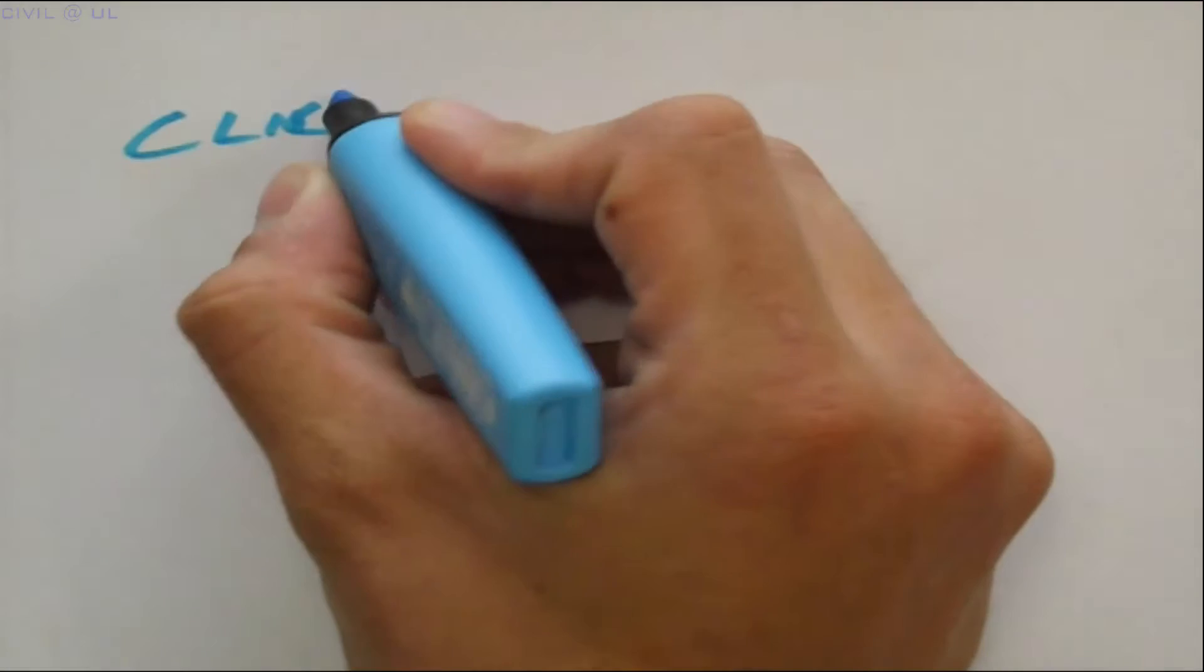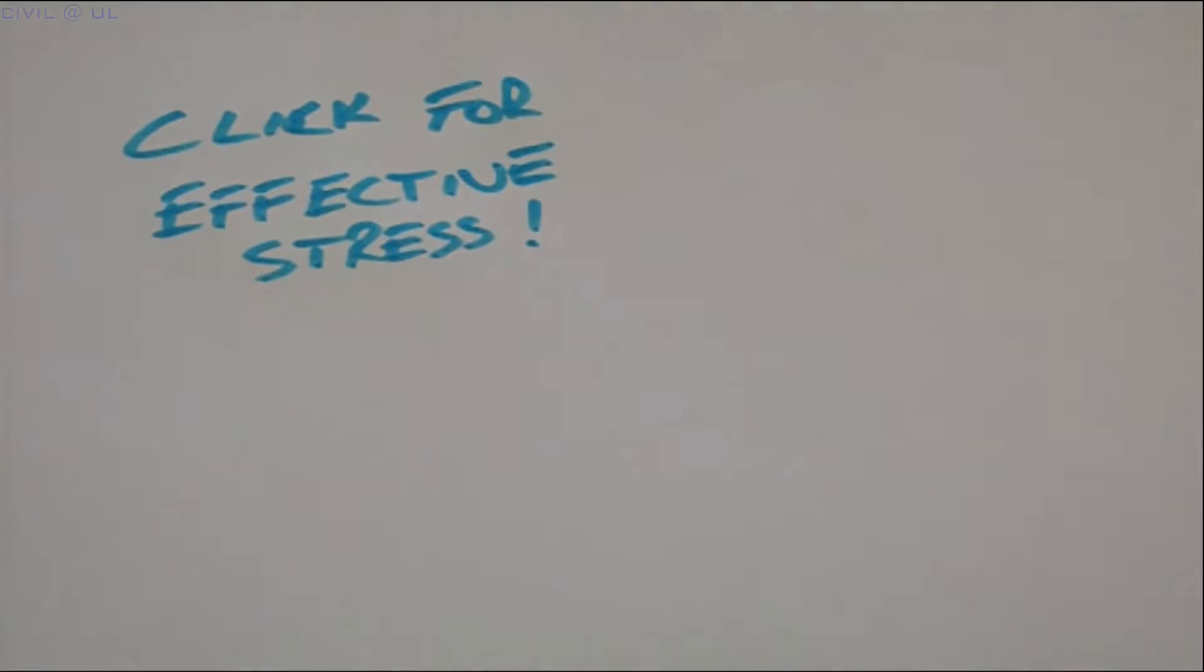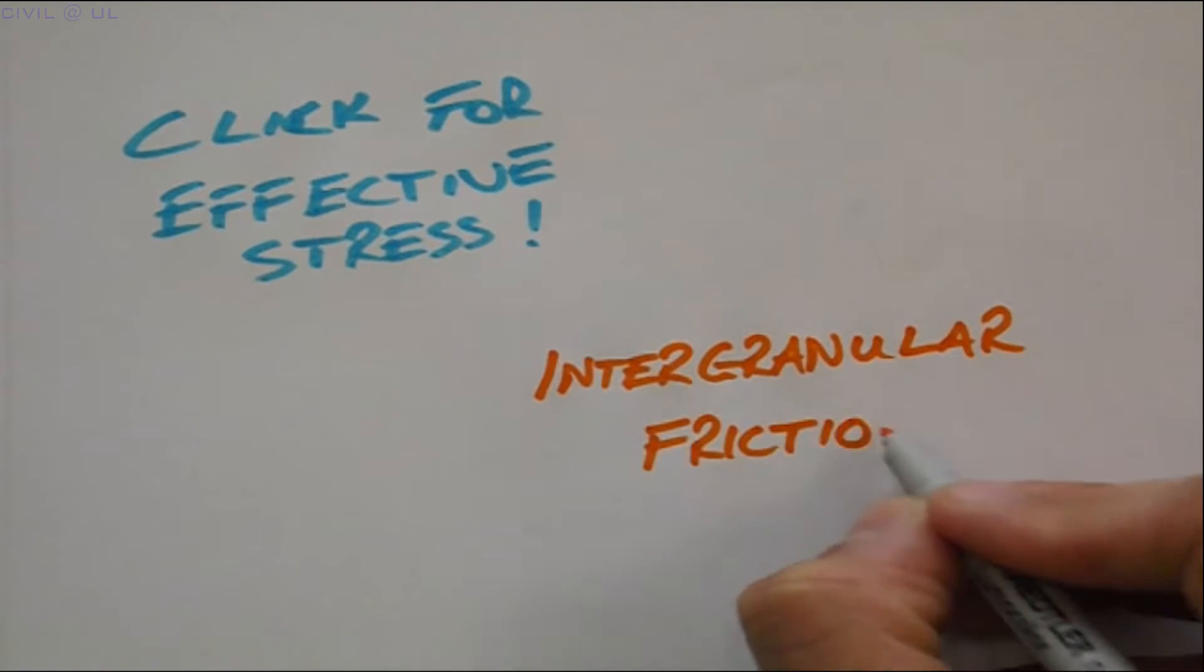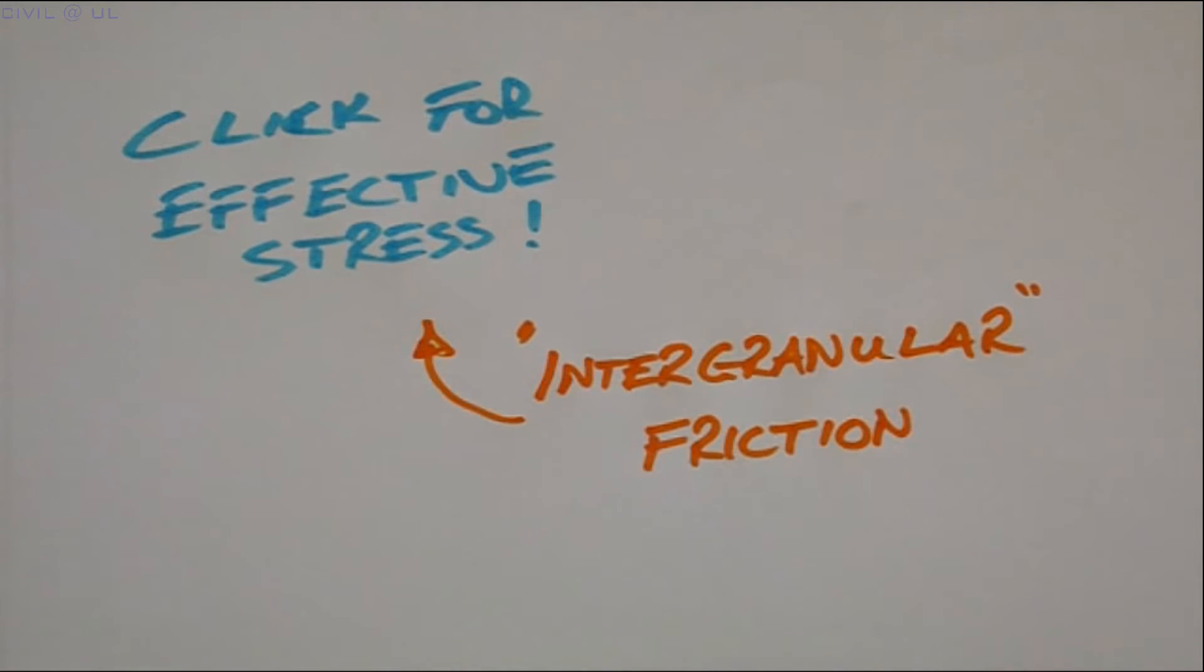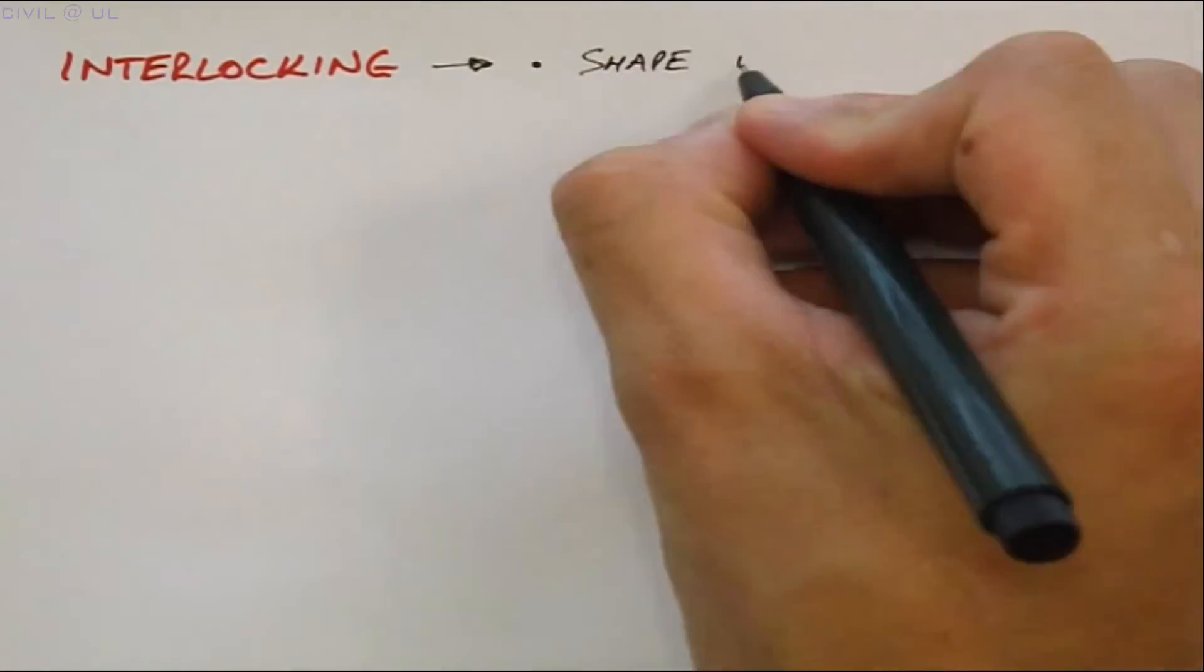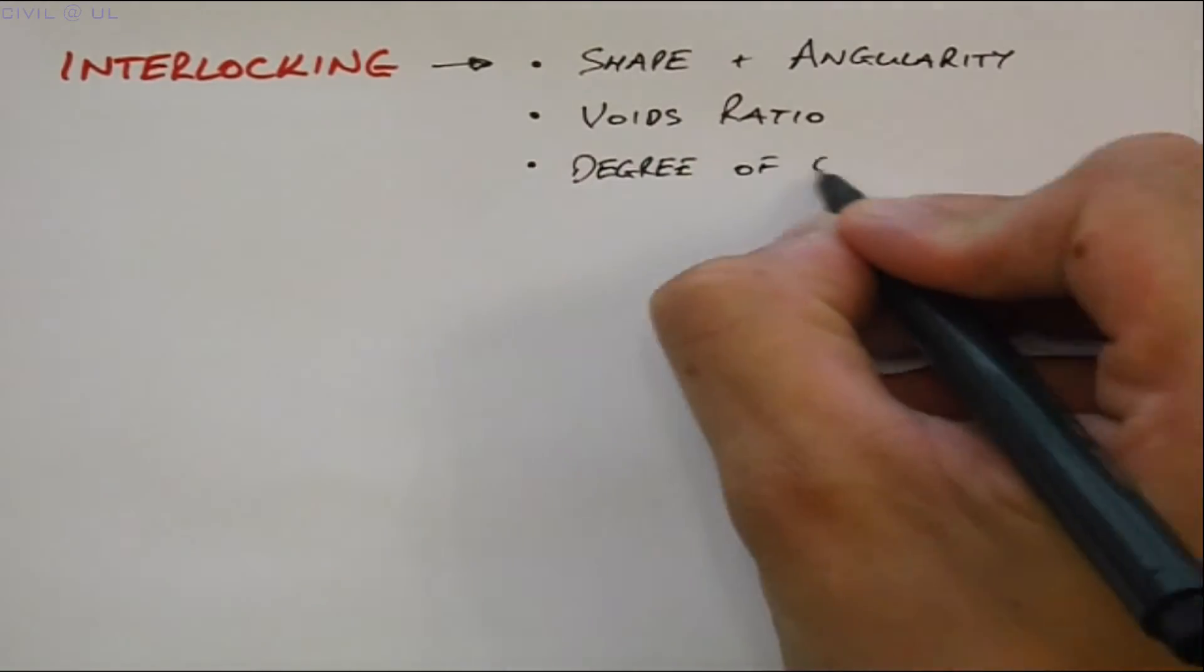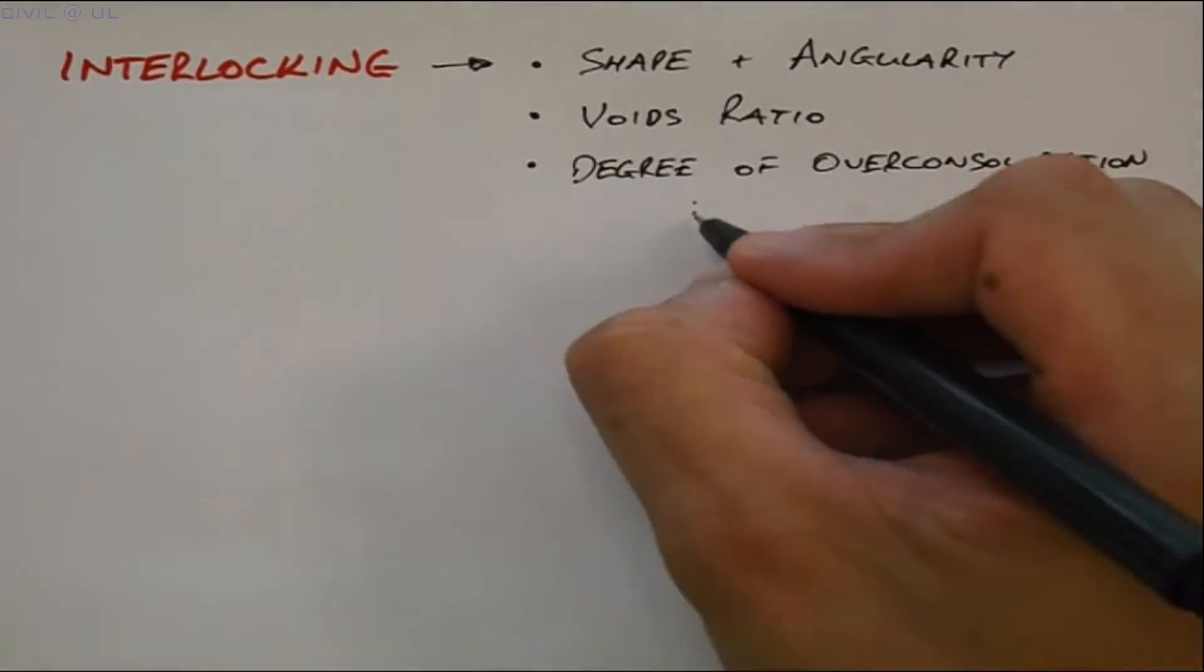For example, recall from our videos on effective stress that soil strength is governed by intergranular friction. Well this is indeed the case, but there's more. The soil contains an additional component of strength that results from interlocking between the soil grains. The contribution to strength from interlocking depends on the shape and angularity of the grain, the in situ voids ratio, the degree of overconsolidation and other factors.